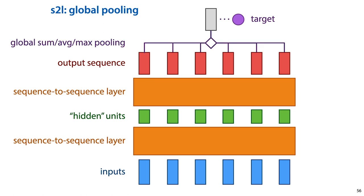We call this global pooling, and there are several operations that can do this for us. We can simply sum or average all the vectors in the output sequence, but we can also apply the max pooling that we saw in convolutional neural networks and apply it not locally, as we did then, but globally to the whole sequence.